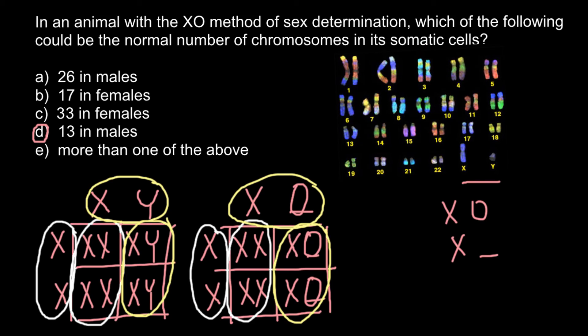In haplodiploidy, the number of chromosomes in males is half the number in females. But in the XO sex determination system, all somatic chromosomes come in pairs — the only difference is in the sex chromosome, where males have one X and females have two. Haplodiploidy is found in bees and wasps and some other insects, while XO sex determination is found in insects such as cockroaches.